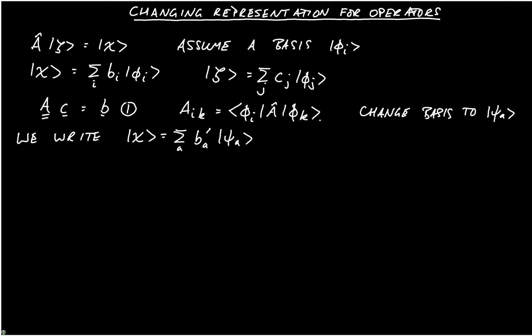We know, as we discussed in lectures and in a previous video, that we can write the vector b' is equal to the matrix S acting on the vector b, and S is the similarity transform. We have b'_A is defined as bra psi_A ket chi, and S_Ai is equal to bra psi_A ket phi_i.